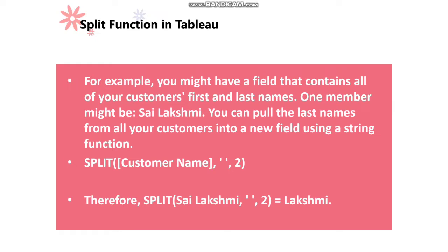For example, you might have a field that contains all of your customers' first names and last names. You can pull the last names into a new field using a string function. The syntax is: split of the column name, comma, within inverted commas you should specify the space or special character available in your data, comma, and then the number of splits you want to perform.